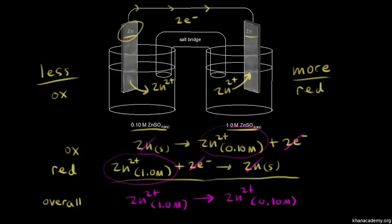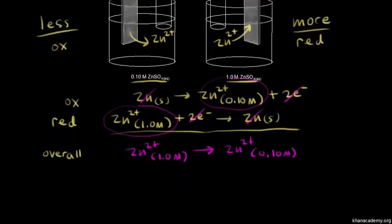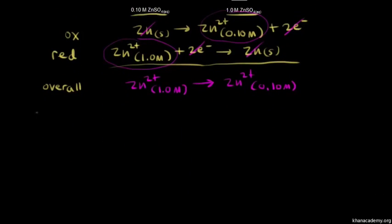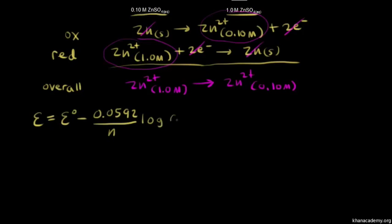How do we find the voltage of our concentration cell? Remember from the last few videos that the Nernst equation allows us to calculate the potential of the cell. The cell potential E is equal to the standard cell potential E° minus 0.0592 over the number of moles of electrons transferred N, times the log of Q. This is one form of the Nernst equation.